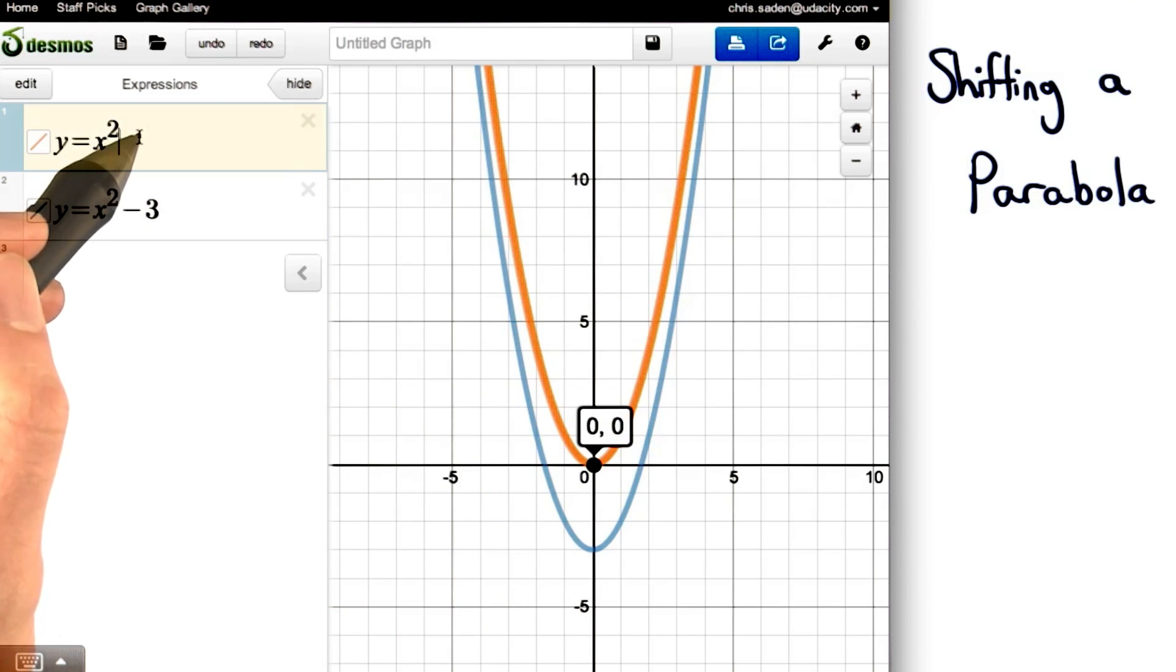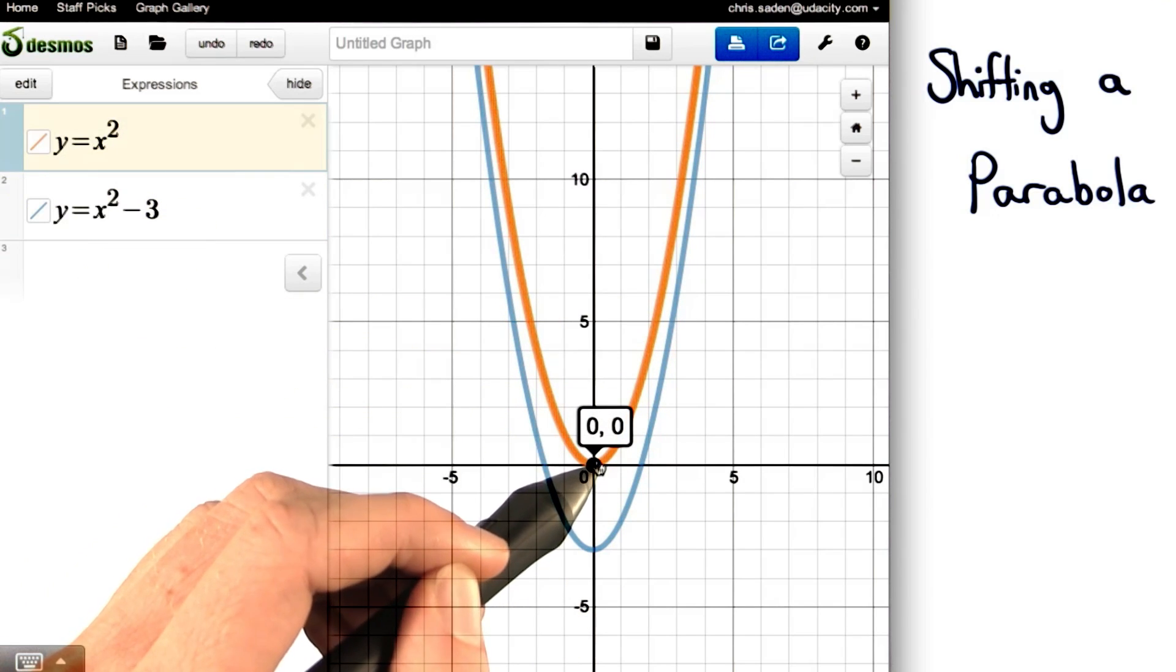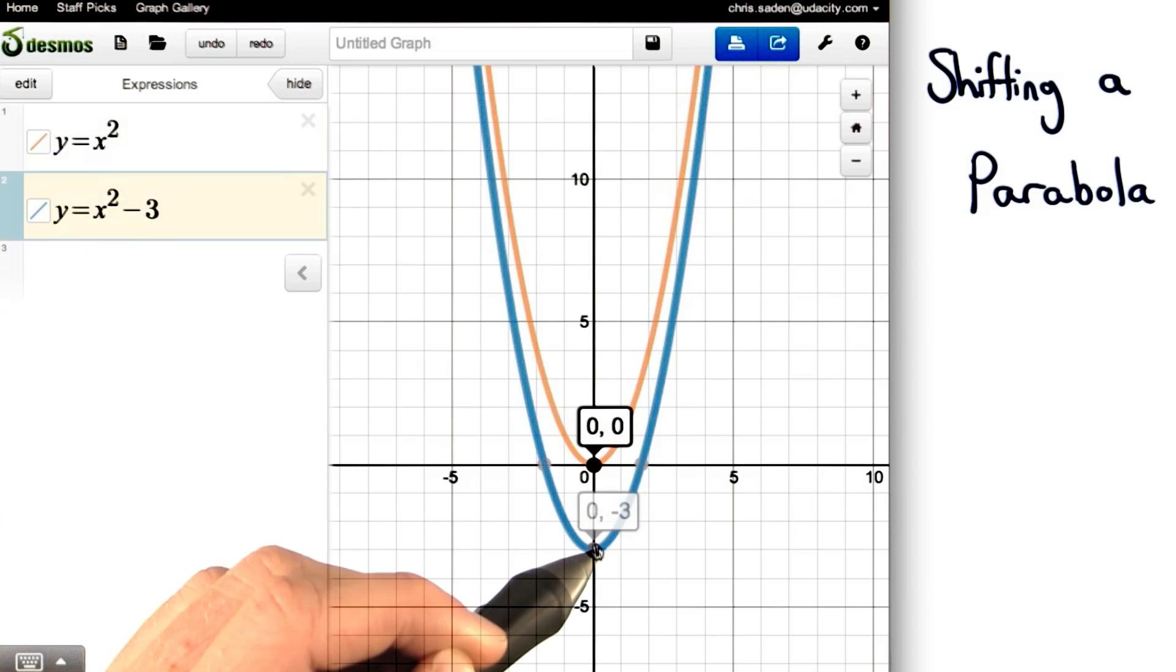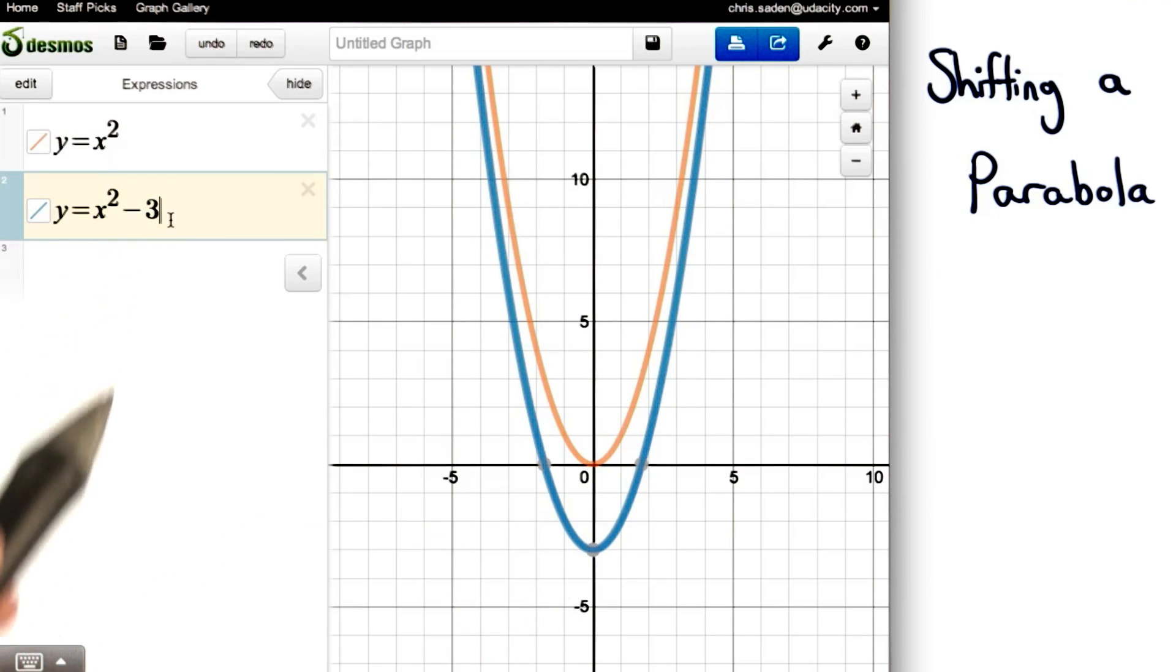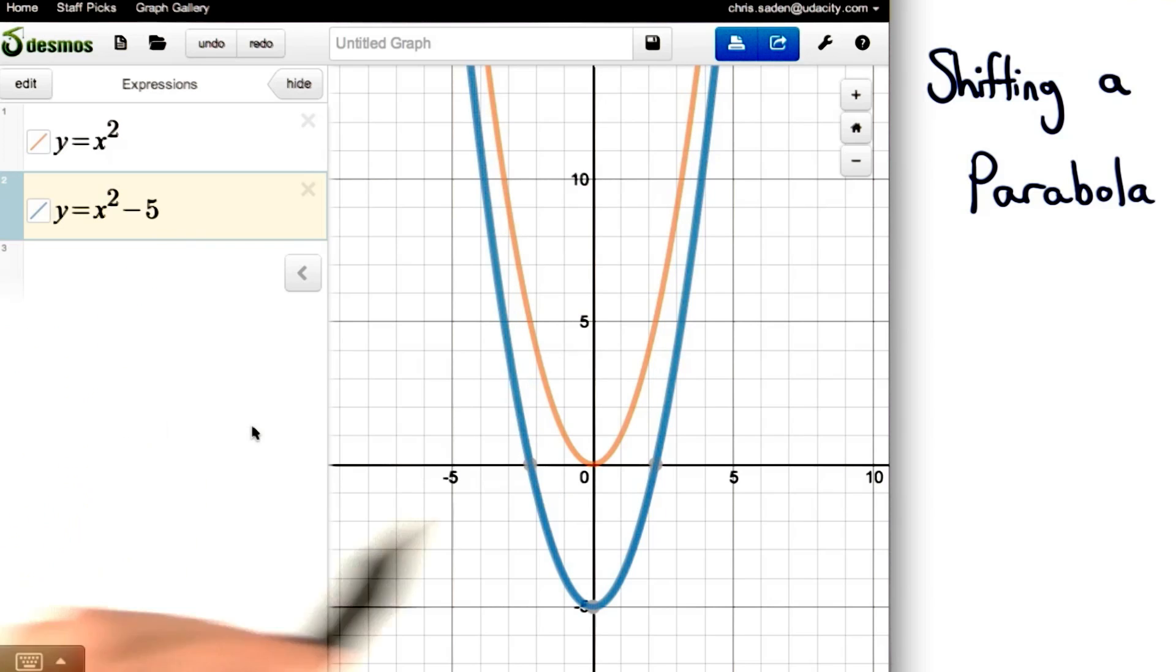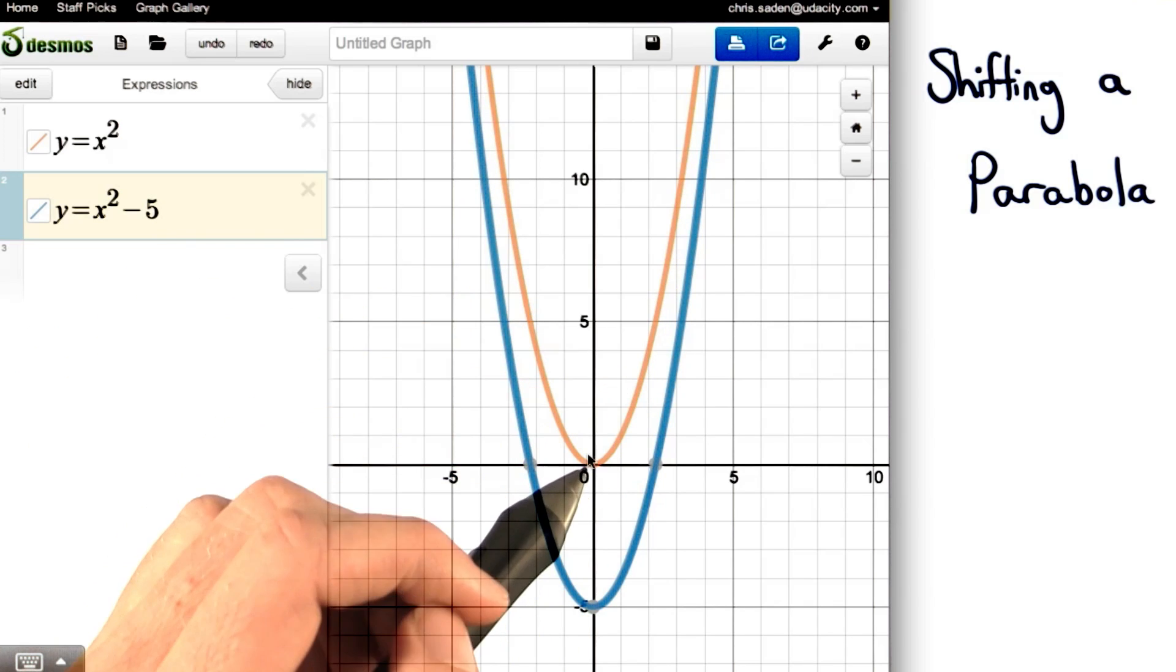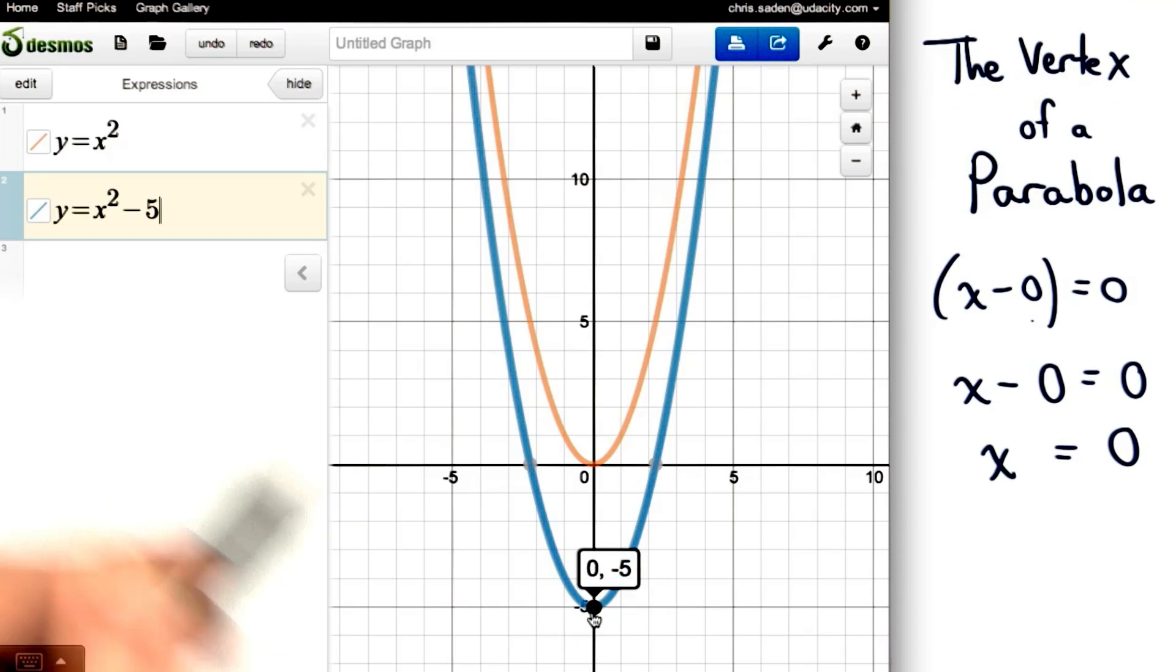And again, notice that the vertex of this last parabola is 0, negative 5. We can see that the y coordinate of the vertex comes from here. This negative 5 is right here on our vertex.